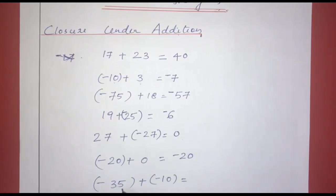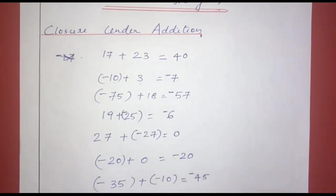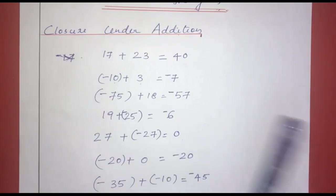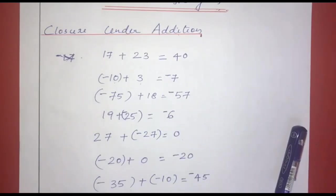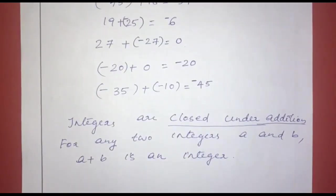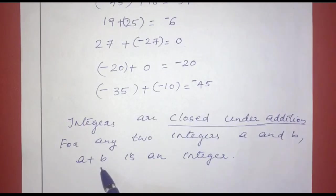Next one: negative 35 plus negative 10. If we add two negative numbers, the result is negative. All these examples give an integer, satisfying the closure property. We can say that the integers are closed under addition. For any two integers a and b, a plus b is an integer.